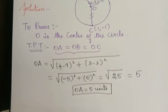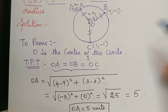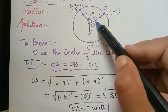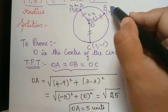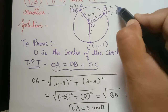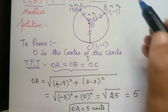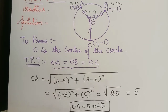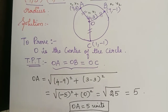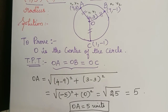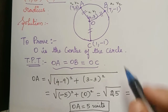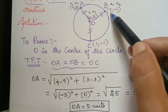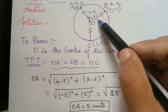Next, we have to find the distance OB. Here x1 comma y1 will be 4 comma 3, and x2 comma y2 will be 7 comma minus 1. So OB will be equal to the square root of (4 minus 7) squared plus (3 minus of minus 1) squared.